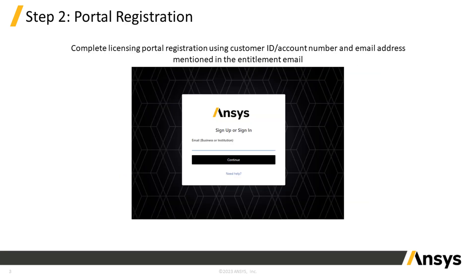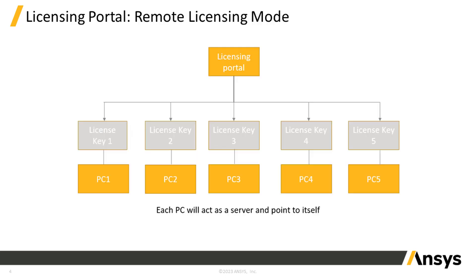After clicking on the licensing portal link in the email, your browser will open a page to sign up or sign into the portal. When signing up for or signing into the licensing portal, remember to use the same email address the entitlement email was sent to, and use the customer ID or account number mentioned in the email.